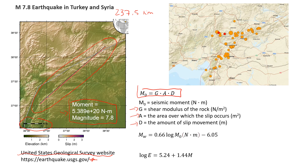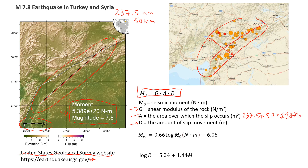That's not enough — we need the full area. Looking at the map showing aftershocks and other earthquakes that occurred at that time, I estimated the fault width to be roughly 50 kilometers. So we can calculate the area: 237.5 times 50 gives us 11,875 square kilometers. Converting to square meters, that is 11,875 times 10 to the power of 6 square meters.